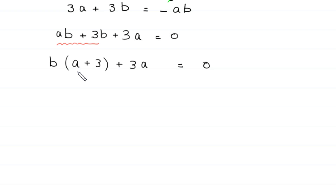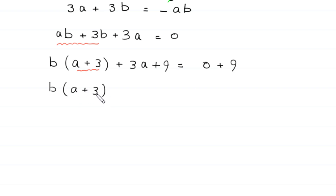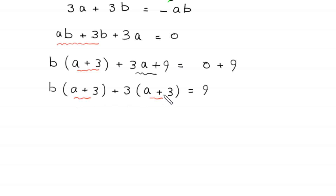From the terms ab plus 3b, we can factor out b, giving b times (a plus 3), plus 3a is equal to 0. Now we have (a plus 3) in brackets. To create (a plus 3) as a common factor, we add 9 to both sides. This gives b times (a plus 3) plus 3 times (a plus 3) is equal to 9. Since (a plus 3) is a common factor, we factor it out: (a plus 3)(b plus 3) is equal to 9.